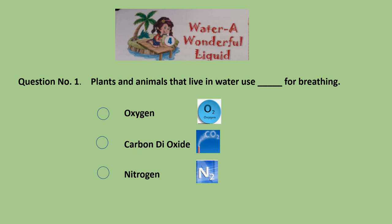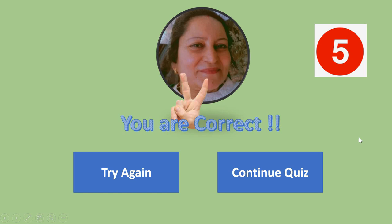First question: plants and animals that live in water use DASH for breathing. The options are: oxygen, carbon dioxide, or nitrogen. Think and tell me which gas they use for breathing. Nitrogen — wrong. Carbon dioxide — again wrong. Oxygen — yes! The first option is correct, and you get 5 marks if your answer was oxygen.